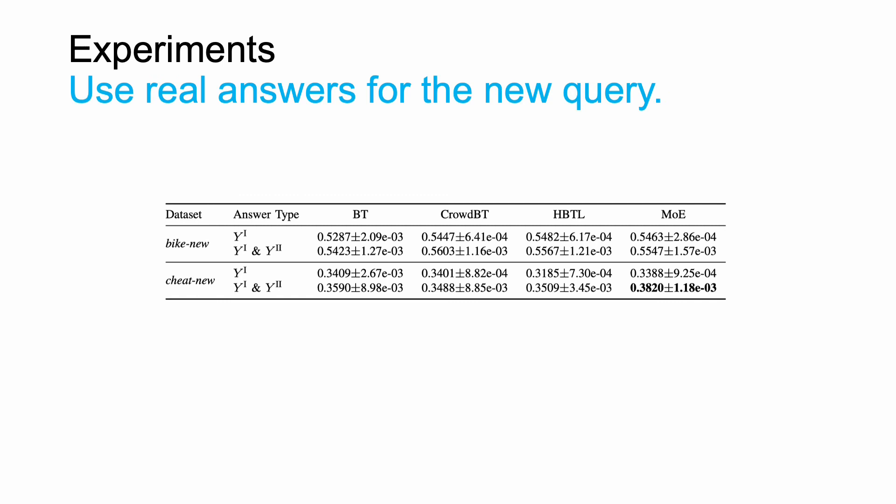Finally, this table presents results for using the real answers for the new query. We created these datasets using the objects of the bike dataset and cheat datasets. Crowd workers were recruited to answer a combination of the existing queries and the new queries. On both datasets, all methods have better performance when using both types of queries, although the improvement is not as significant as using the synthetic answers for the new query. These results suggest that perhaps the new query is more difficult than the existing one, so crowd workers might make more mistakes. But nevertheless, it is beneficial to use both types of queries for PRA. The proposed MOE has the best performance on the cheat new dataset, while CrowdBT has the best performance on the bike new dataset, confirming that the proposed MOE can have better performance on some tasks.